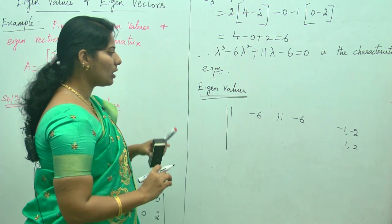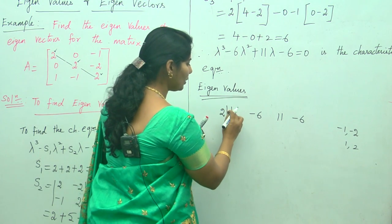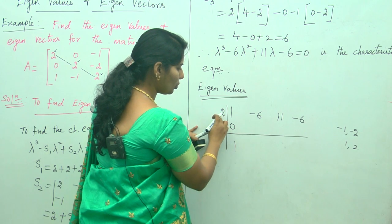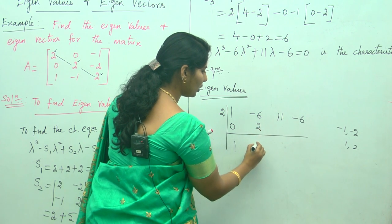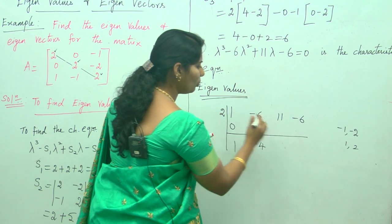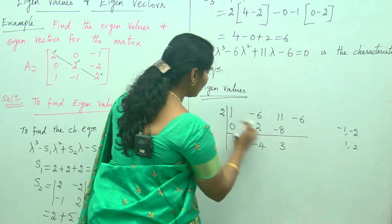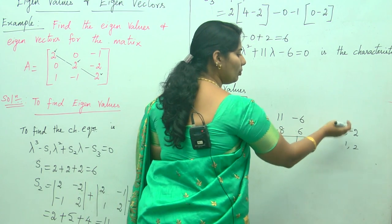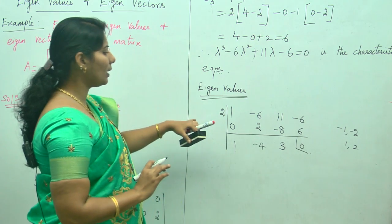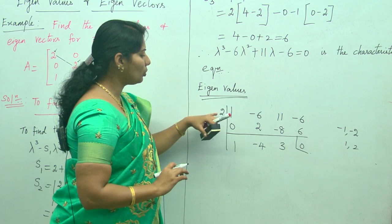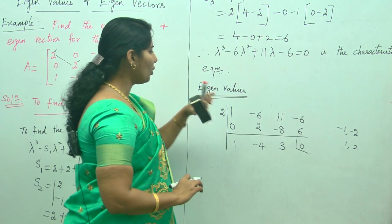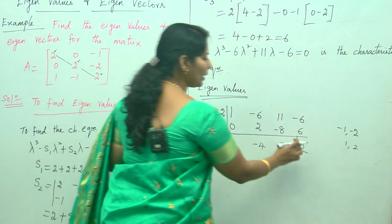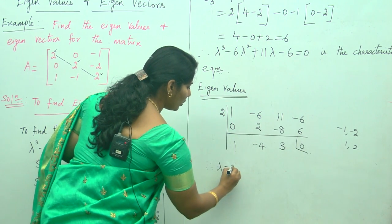Try roots such as 1, 2, 3, -1, -2, etc. Here we try root 2. Put 0 for the first element. You get: 1 plus 0 = 1; 1 times 2 = 2; -6 plus 2 = -4; -4 times 2 = -8; 11 plus (-8) = 3; 3 times 2 = 6; -6 plus 6 = 0. The remainder is 0, so lambda equals 2 is a root.